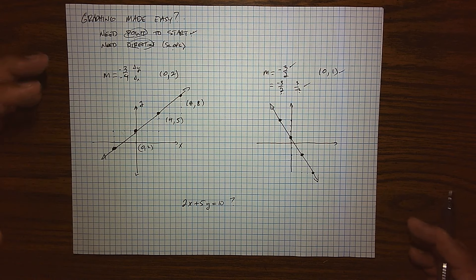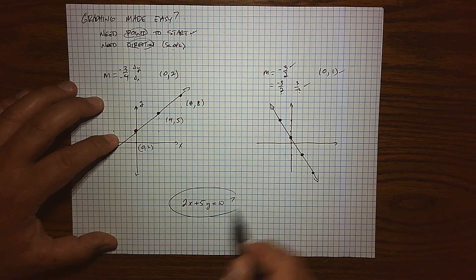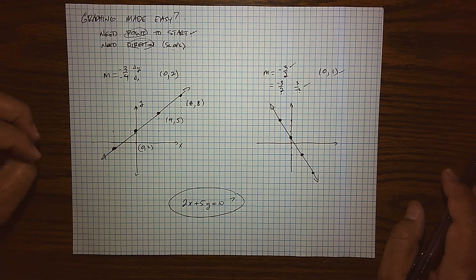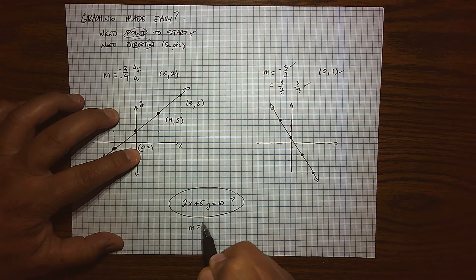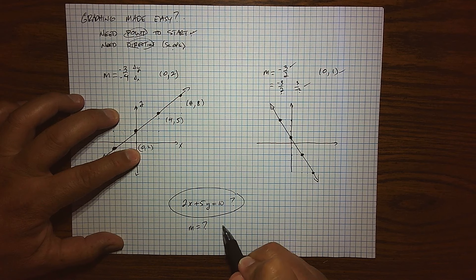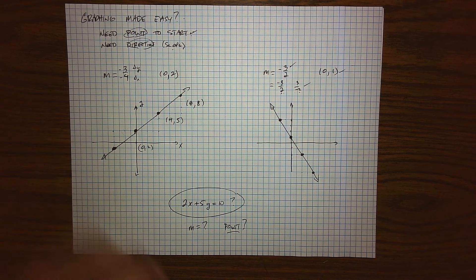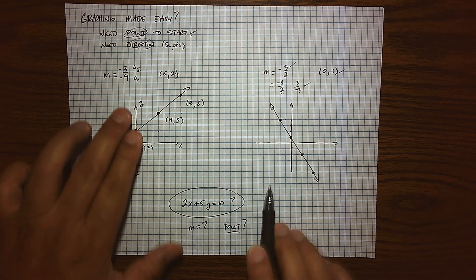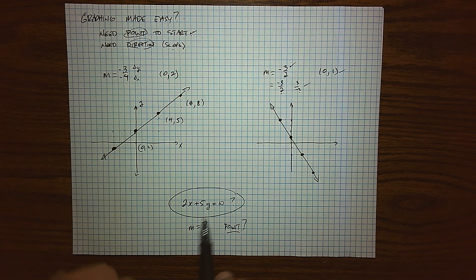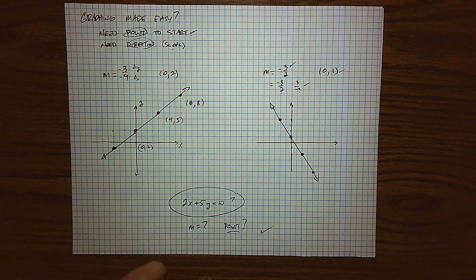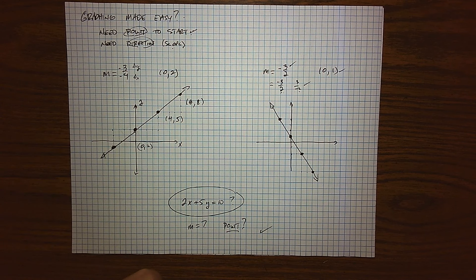So now the challenge is, how do I go from the equation like we've been dealing with, 2x plus 5y equals 10, and how do I find the slope for that line? And how do I find a point for this line? And so that's going to be our next challenge because we can see if I can find a point and I can find the slope, graphing is pretty easy. So we'll do that in the next video. I'll see you guys there where we'll pick up this story. Talk to you later.